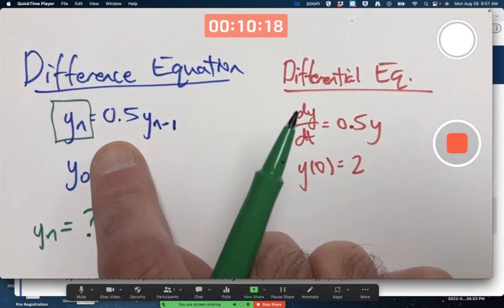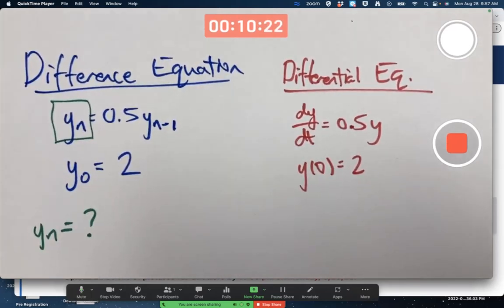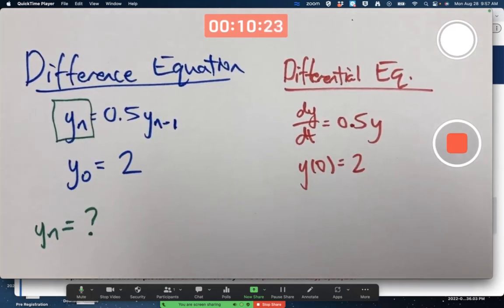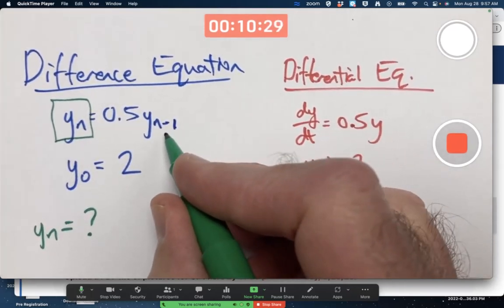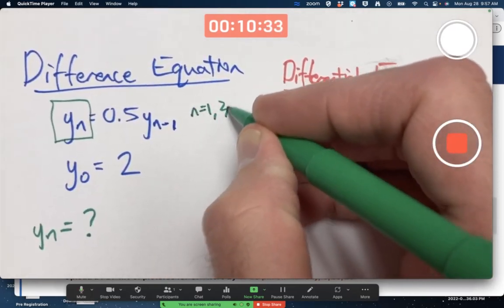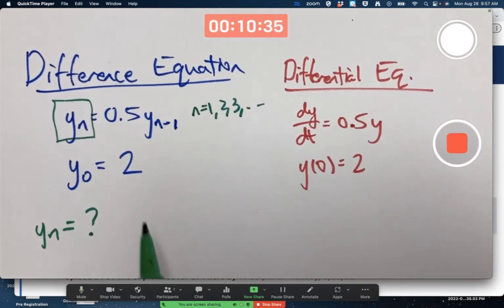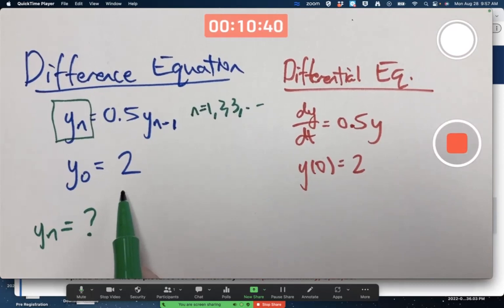Technically speaking, we do want to start n at a value of 0, y sub 0. That's the initial condition. First n is 0, then n is 1, then n is 2, then n is 3, etc. In this equation here, actually, since there's an n minus 1 there, I actually would want to start n at 1 here. But y sub 0 is defined by this initial condition. Y sub 0 does equal 2.